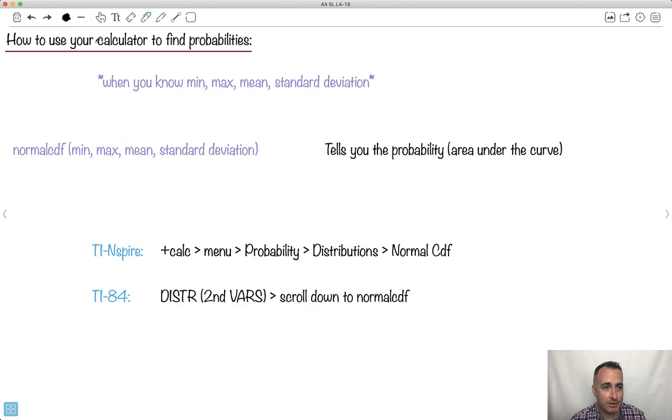Let's learn how to use your calculator to do this. This is when you know the minimum, the maximum, the mean, and the standard deviation. You want to know the area underneath the curve. We're going to use something called normal CDF, and this will always give you the probability. The mean is mu, standard deviation is sigma. This is going to be the key, the big important part here: normal CDF.